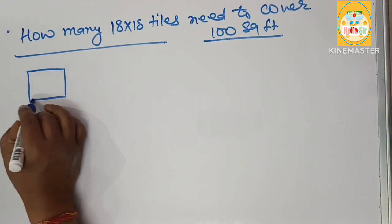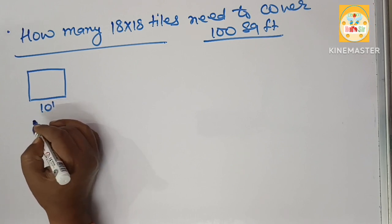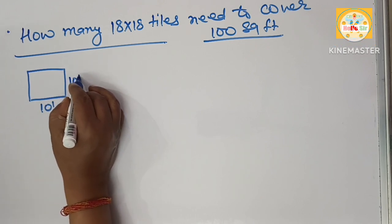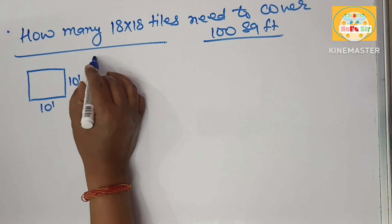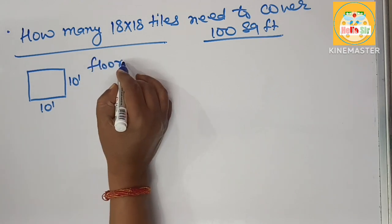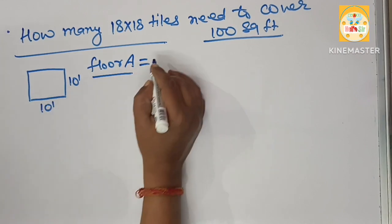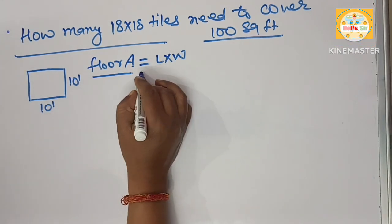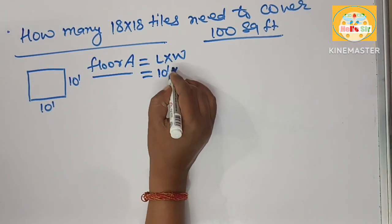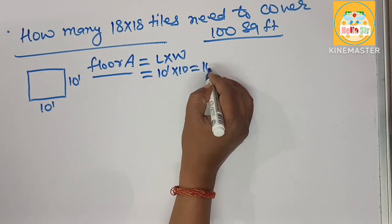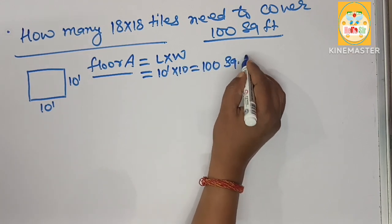Suppose this is a room. The width is 10 foot and length is 10 foot. The floor area of this room you can multiply length and width. That's why 10 foot multiplied by 10 foot, this will come to 100 square foot.